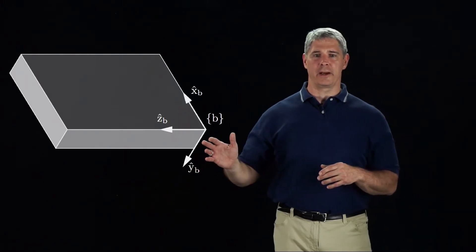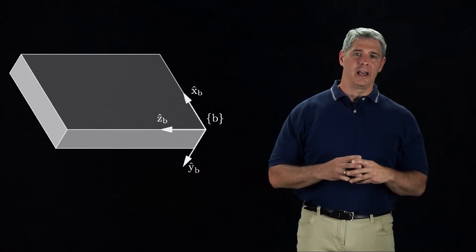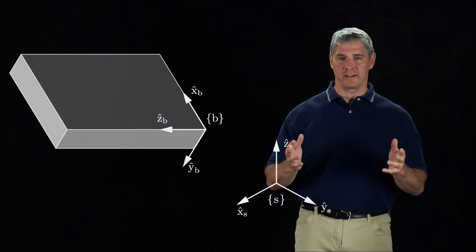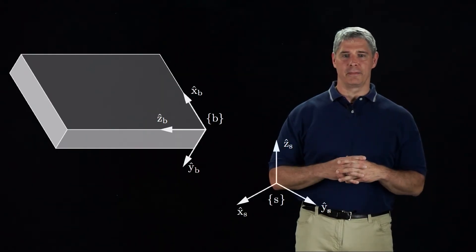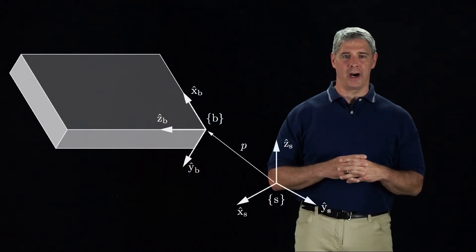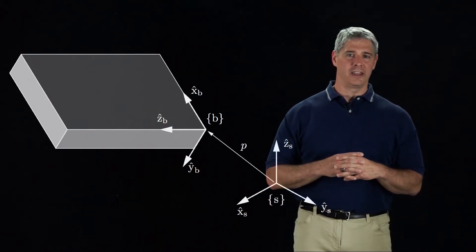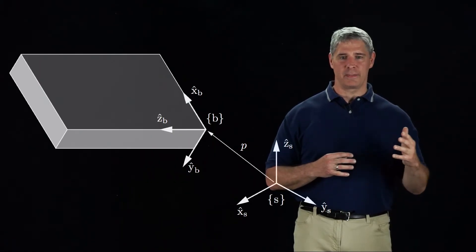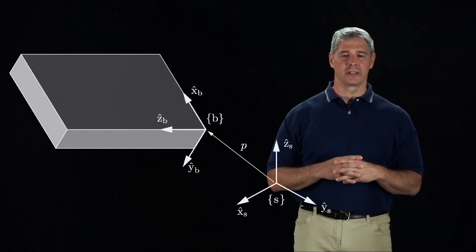If I want to represent the position and orientation of a body in space, I fix a frame to the body and fix a frame in space. The configuration of the body is given by the position of the origin of the body frame and the directions of the coordinate axes of the body frame, expressed in the space frame coordinates.